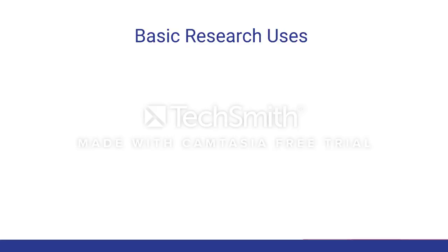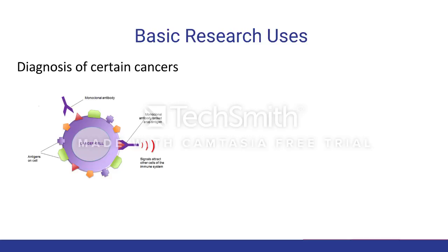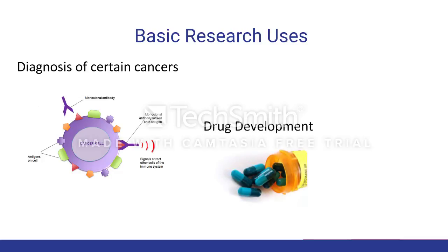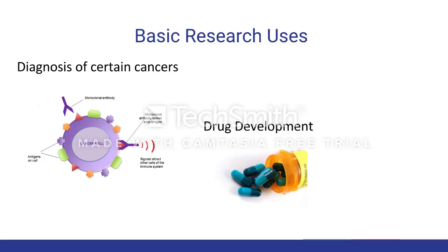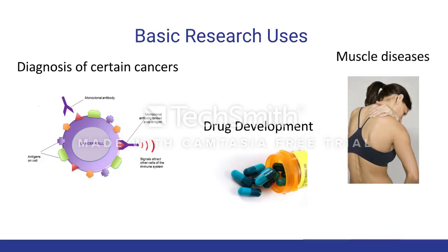Though there are many research uses for immunofluorescence, a couple that we have chosen to talk about are diagnosis of certain cancers, drug development, and muscle diseases. In the diagnosis of cancer, specific tumor markers labeled with fluorochromes can be used to determine if a tumor is benign or malignant. Drug development can use immunofluorescence by testing for a drug's efficiency, detected by visualizing activity through fluorescence. Immunofluorescence can also aid in muscle disease diagnosis when detecting for known abnormalities, which are typically located in the sarcolemma, extracellular matrix, or the nucleus.